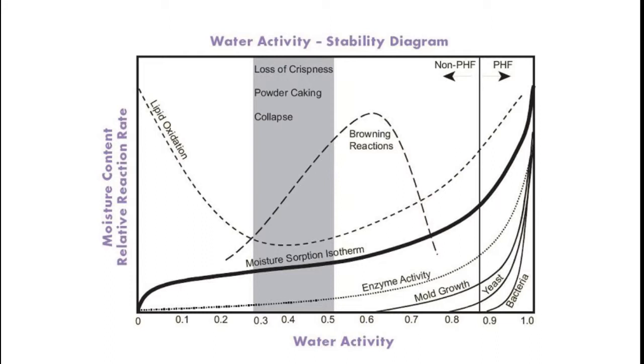There are some yeasts that are capable of growing at slightly lower water activity and some fungi or molds that are capable of growing at even lower water activities. We get to that threshold of 0.6 and very few things are capable of growing from a microbial spoilage perspective.